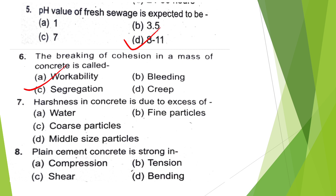The breaking of cohesion in a mass of concrete. Harshness of cement in concrete is due to excess of water, fine particles, coarse particles, or middle-sized particles? The answer is option D — Middle-sized particles.